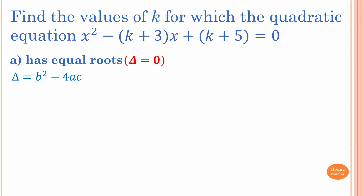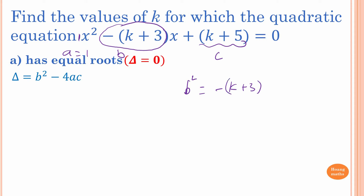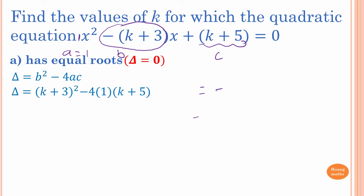The discriminant is b² minus 4ac. Here b is minus(k+3), a is 1, and c is (k+5). Because b is negative and we're squaring it, b² equals (k+3)². So b² minus 4ac expands out to give us (k+3)² minus 4(k+5).